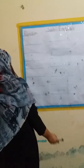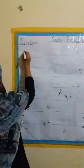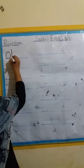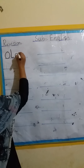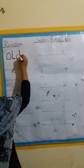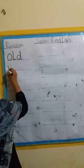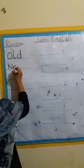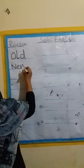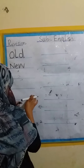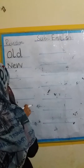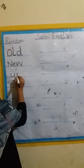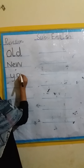The fourth one is old, old. After old, new. After new, the tricky word: Y, O, U — you.